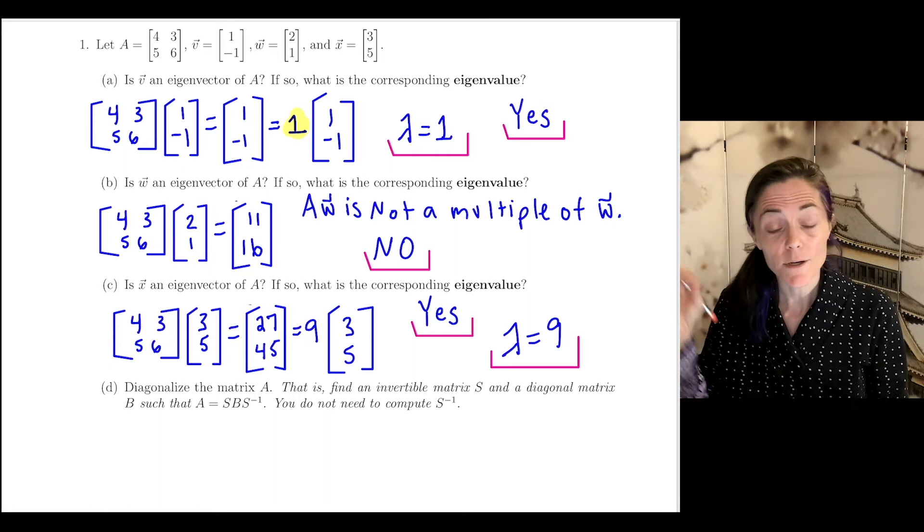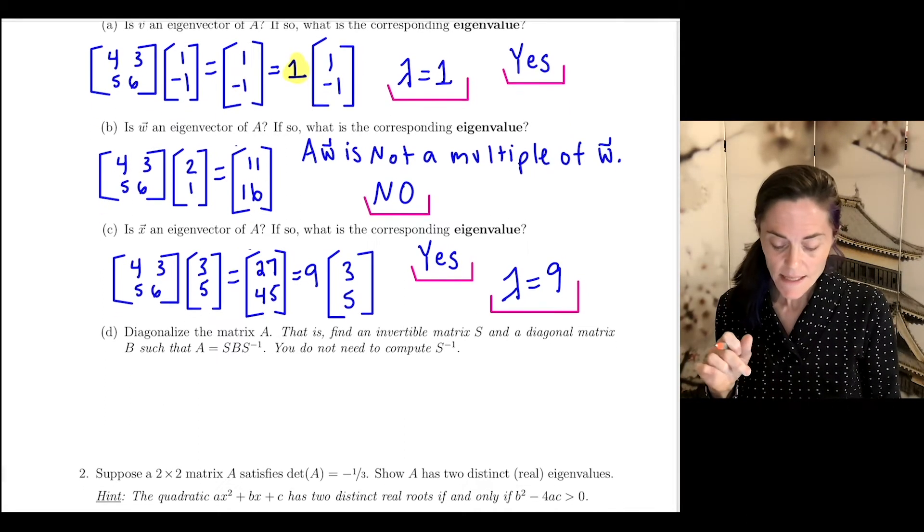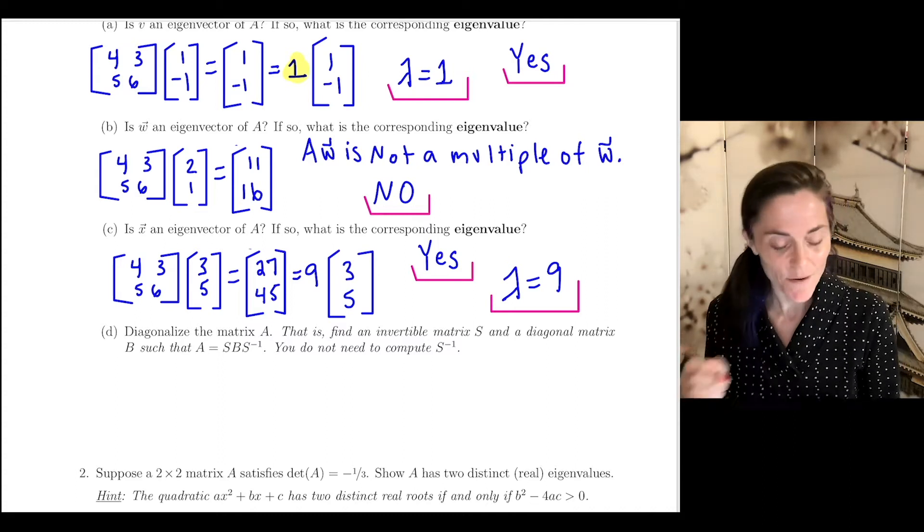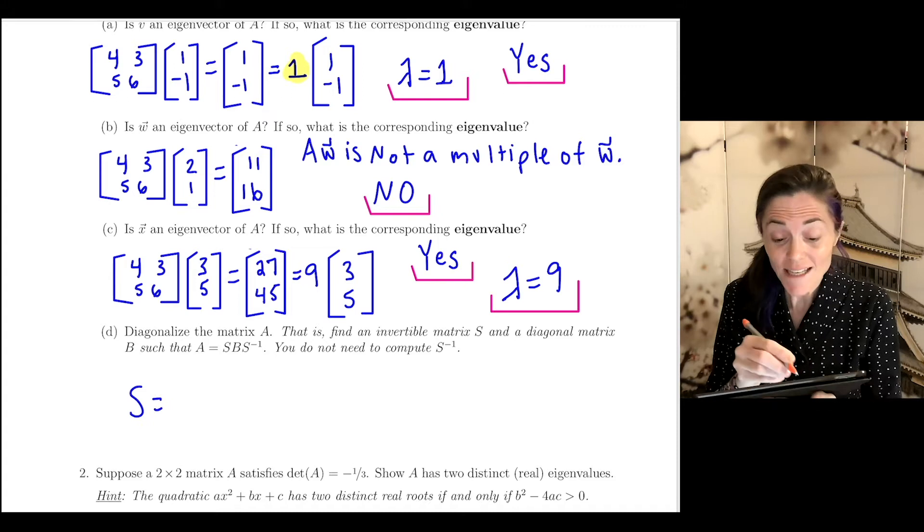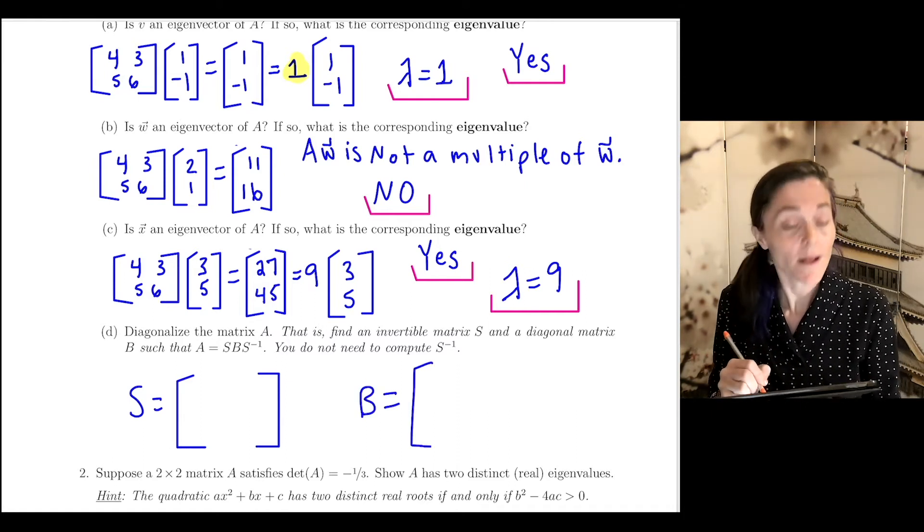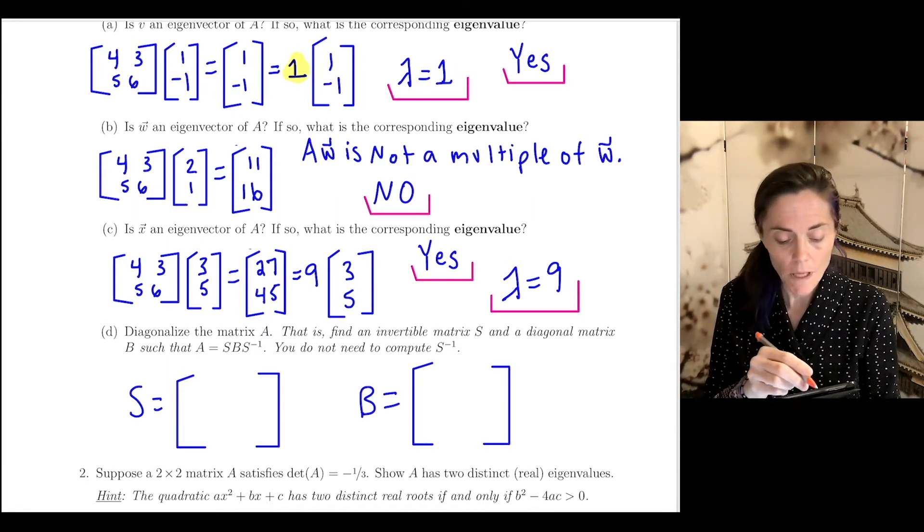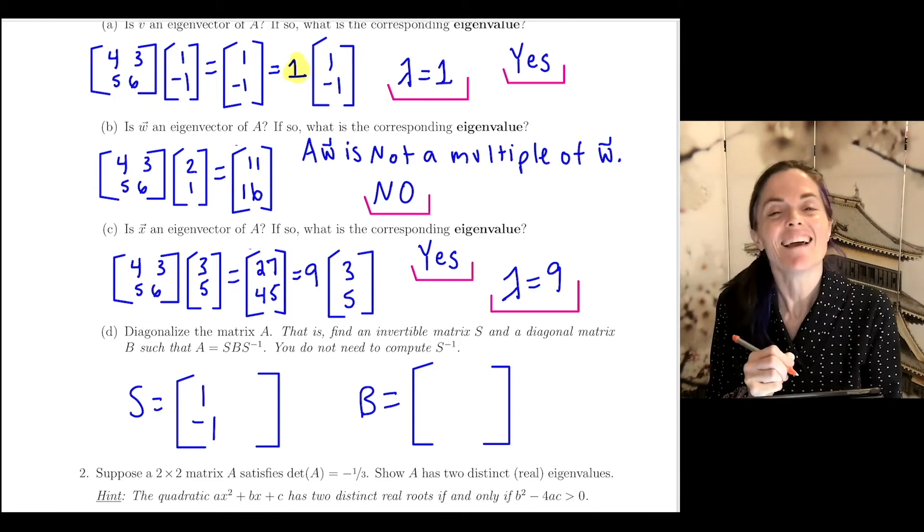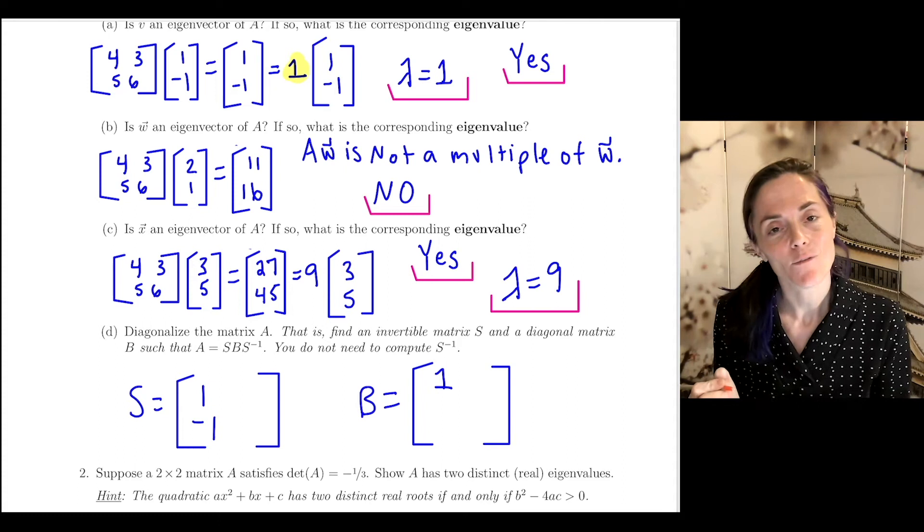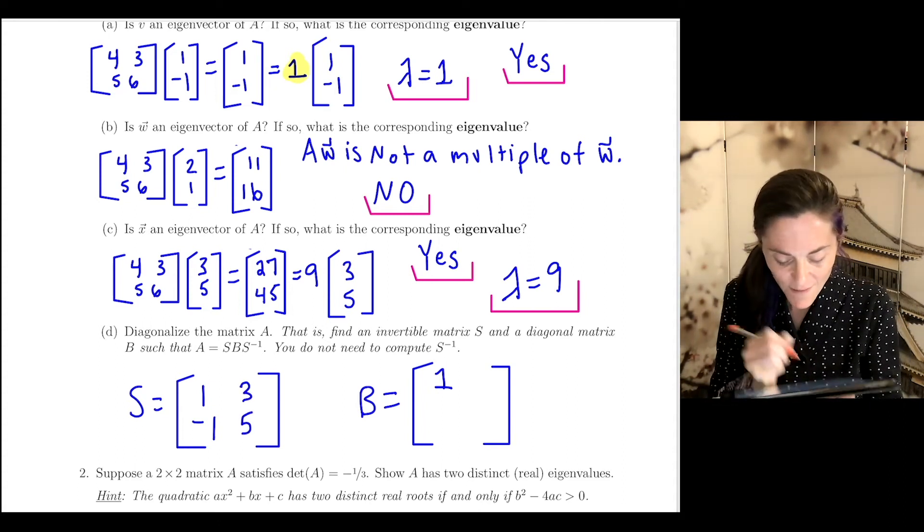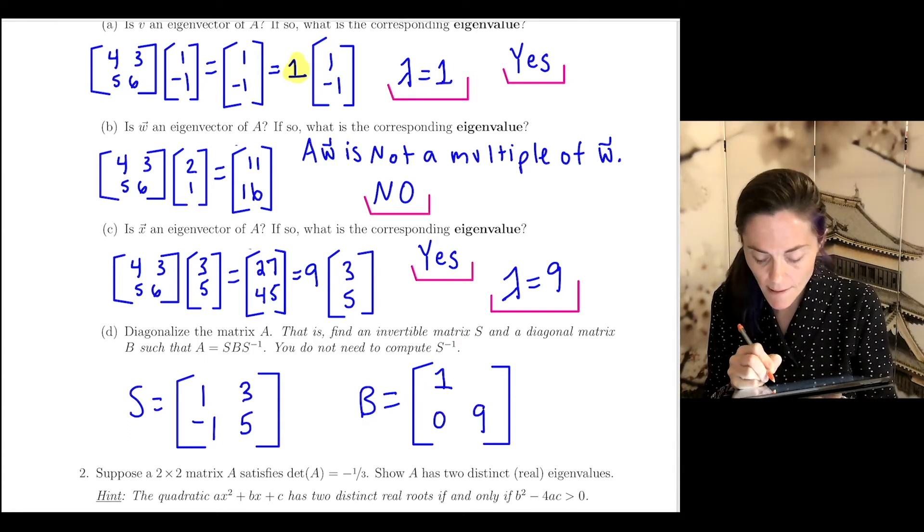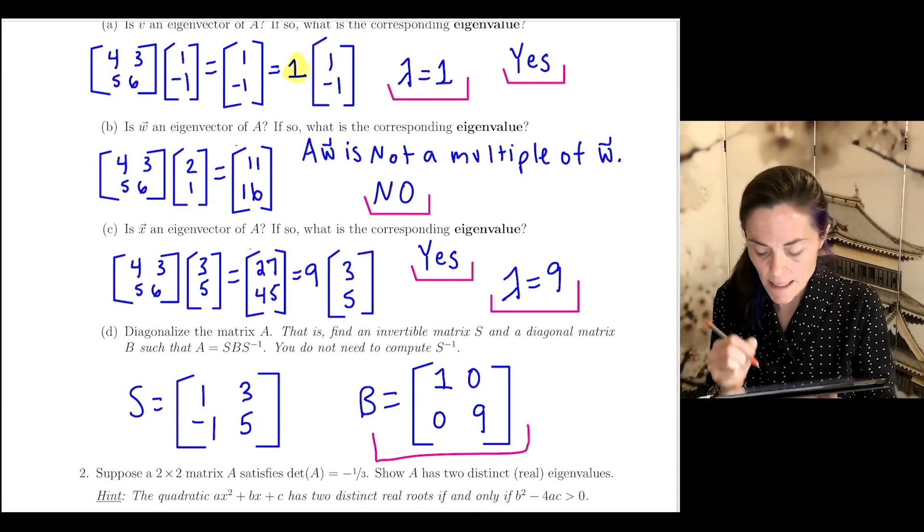Now letter D: we want to diagonalize the matrix A. That is, find an invertible matrix S and a diagonal matrix B such that A equals S B S inverse. Matrix S is our matrix of eigenvectors, and B is our diagonal matrix. I can put as my first column vector (-1, 1) in S, and that tells me the (1,1) entry in matrix B will be 1, the eigenvalue for that vector. Also in S, I can put column (3, 5), and that tells me in matrix B the (2,2) entry should be lambda equals 9. This would be a diagonalization of matrix A.